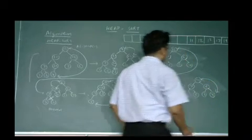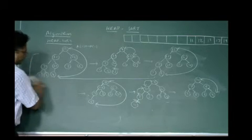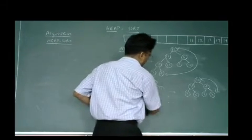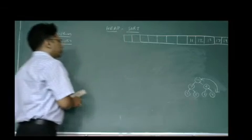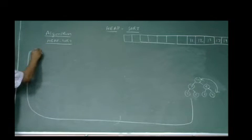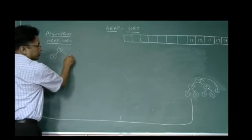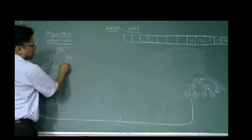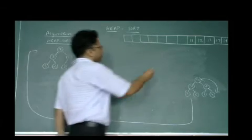Again the last element is swapped with the first element. After swapping: 4, 7, 6, 5, 2, 3, and 10. The 10 is removed and placed in the sorted array. We run the heapify function at root node A1.